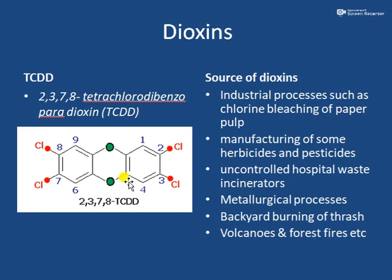Dioxins can be obtained from industrial processes such as chlorine bleaching of paper pulp, manufacturing of herbicides and pesticides, or when uncontrolled hospital waste incinerators are used. During incineration, dioxins can be liberated into the atmosphere. Metallurgical processes, backyard burning of trash, volcanoes, and forest fires can also release dioxins.